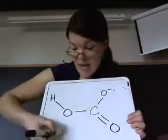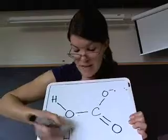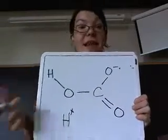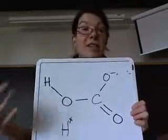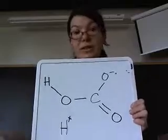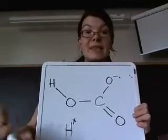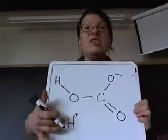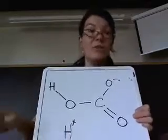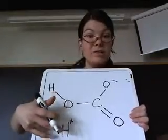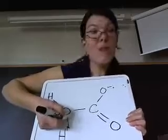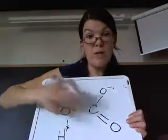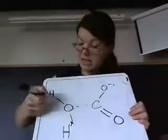And then a proton wanders by from the acid. If you remember from chemistry, acidity just measures how many protons there are floating around in the liquid. The more acidic something is, the more protons — or these charged hydrogen ions — it has floating around. So this proton from the acid sneaks in here, bonds with this oxygen, and breaks this bond open, leaving you with two byproducts.